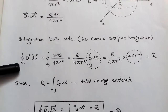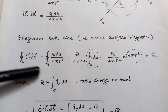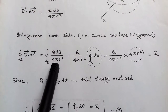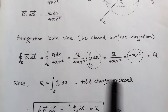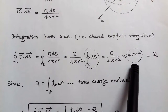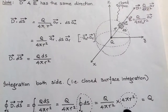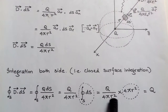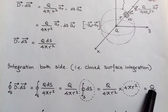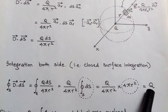We integrate both sides — taking a closed surface integration on both sides. q upon 4 pi r-squared is a constant, and the closed surface integration of dS equals 4 pi r-squared, because this is a closed sphere and the surface area of a sphere is 4 pi r-squared. So 4 pi r-squared cancels in numerator and denominator and we get only q. Therefore, the closed surface integration of D dot dS equals q.